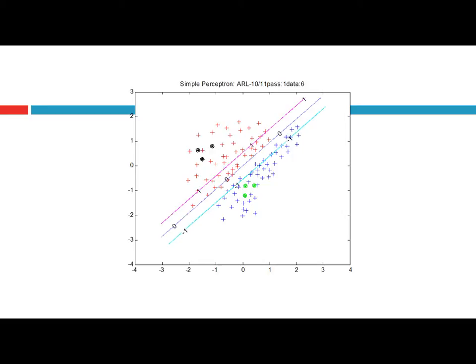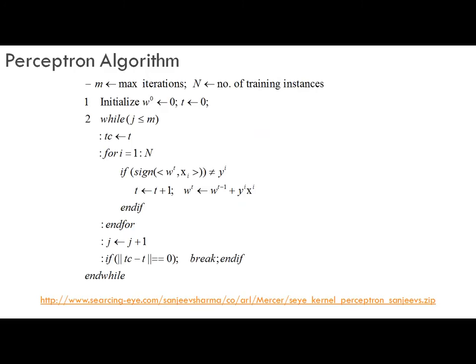Both of the next training instances are correctly classified by this decision boundary, and therefore no change is made to the decision boundary or the weight vector W. This is the perceptron learning algorithm. We give the maximum number of iterations or the maximum number of passes through a dataset. In general, a single pass over the dataset is not sufficient to determine the decision boundary, and therefore we give the maximum number of iterations or passes through the dataset.